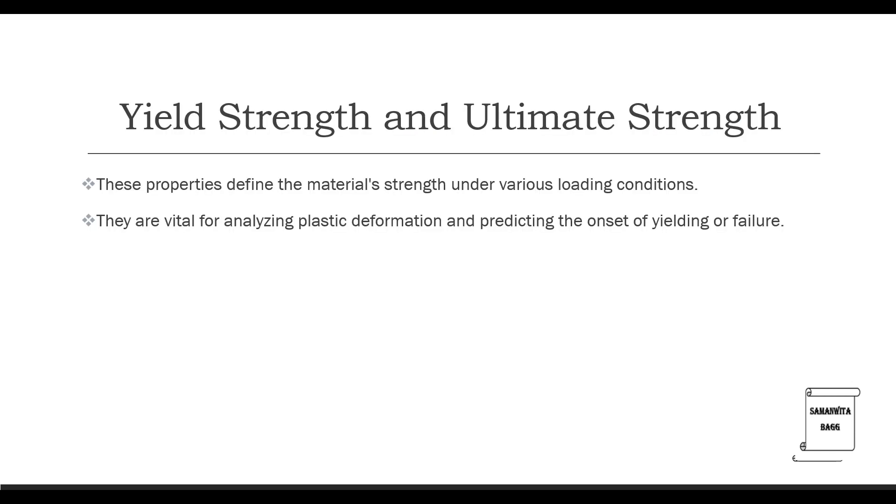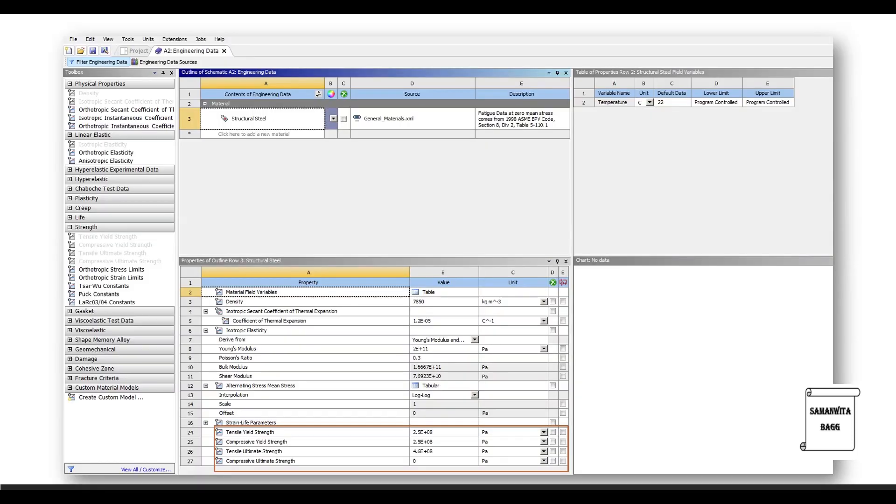Yield strength and ultimate strength. These properties define the material strength under varying loading conditions. They are vital for analyzing plastic deformation and predicting the onset of yielding or failure. So again you can see here for the material structural steel, I am showing you the value of tensile yield strength, compressive yield strength, tensile ultimate strength and compressive ultimate strength. These are the properties which are to be incorporated if you want to see the fatigue or the failure in a material. Now this is an inbuilt material of ANSYS, that is structural steel. So these properties are already present. But if I have to create a new material, you can click here to add a new material in the section. When you add it, you will have to give these properties from your end in case you want to see the factor of safety of the component that you are designing and analyzing.